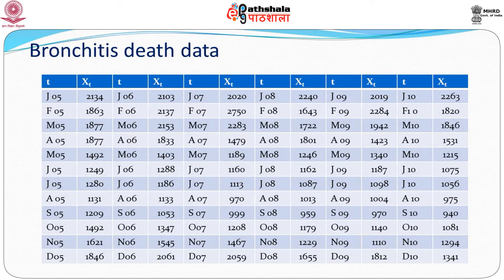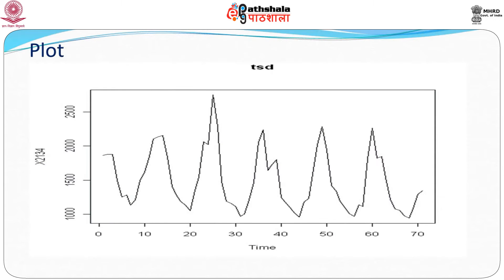Here is data for bronchitis deaths from January 1965 to December 1970 — six years of monthly data. This is the kind of structure that monthly time series data would have. If you plot the data, we see that it has a particular structure, and this is one reason why we would be interested in looking at time series data.